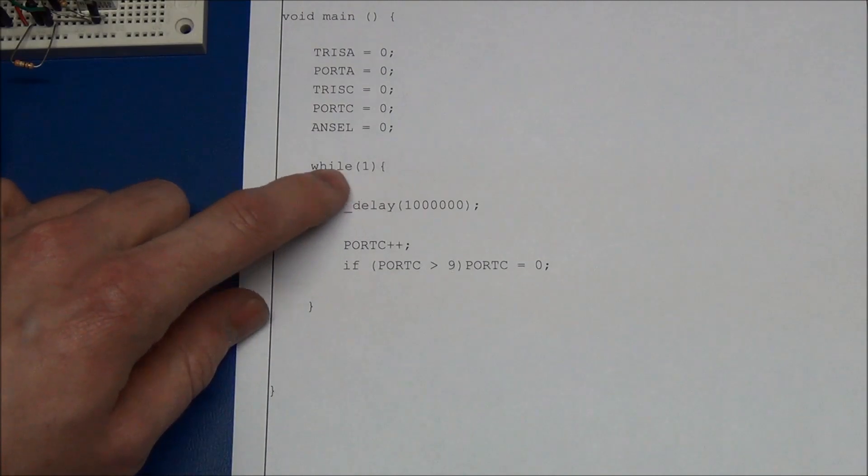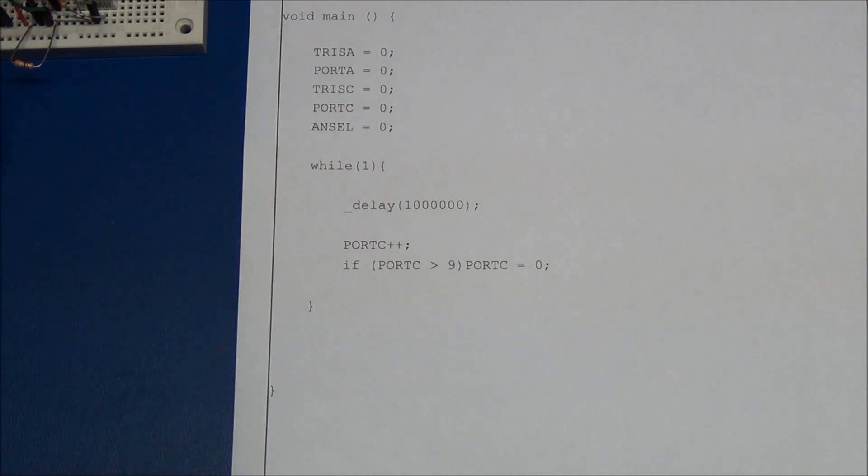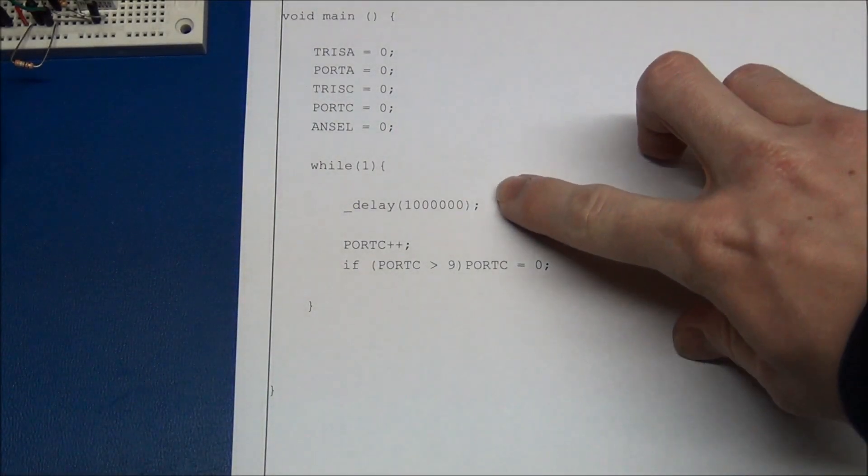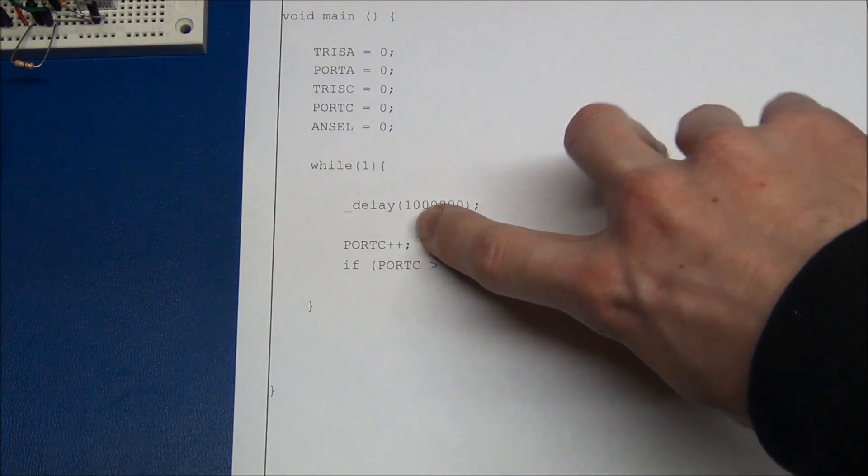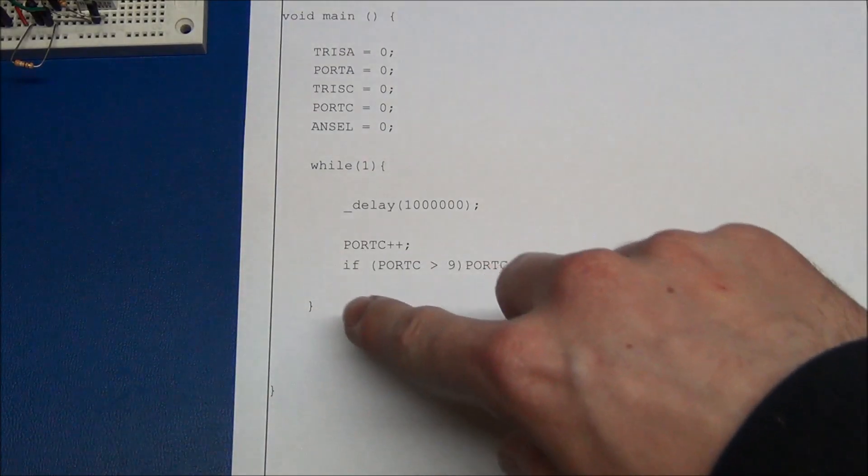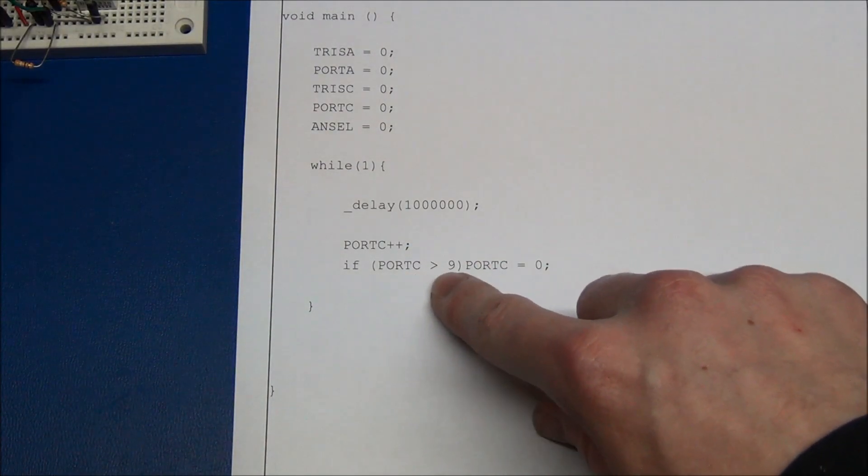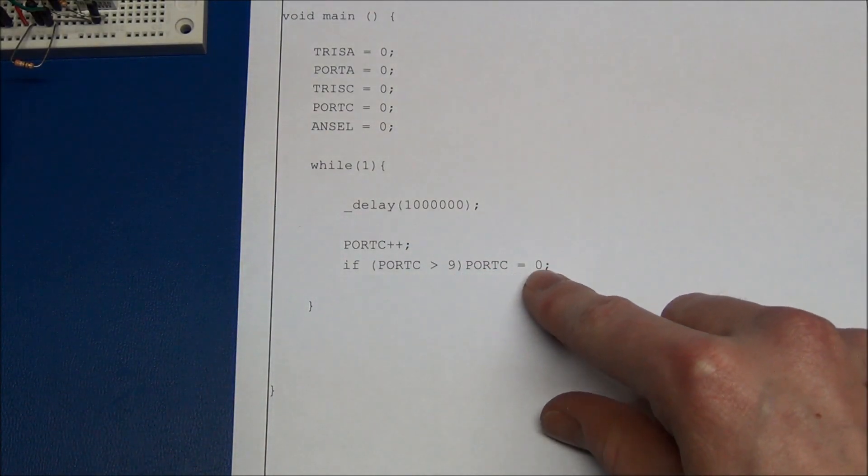And we enter a loop that lasts forever. We have a 1 second delay, and we will increment port C by 1. And we will just keep doing that until port C is greater than 9, and it will reset to 0.